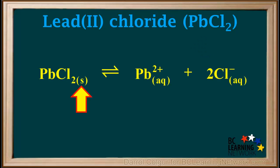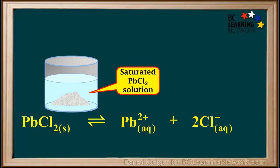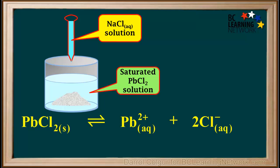Its solubility equilibrium equation is written with the solid on the left and its dissolved ions on the right. Here is a diagram representing the saturated PbCl₂ solution. Like all saturated solutions, there is some solid on the bottom. Now we obtain a dropping pipette filled with NaCl solution. NaCl is highly soluble. We add this NaCl solution to the saturated PbCl₂ solution. Notice that the amount of precipitate slowly increases.